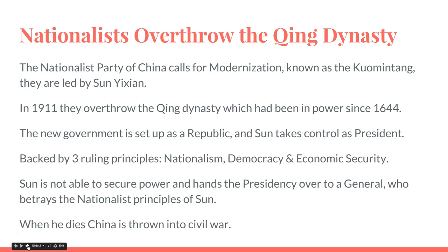So first, we need to talk about the different groups that were dissatisfied and angry with the Qing Dynasty and their emperor. One of the groups was called the Nationalists — the Nationalist Party of China — and they called for modernization. They were led by a guy named Sun Yat-sen. The party is also known as the Kuomintang. In 1911, they actually overthrew the Qing Dynasty, which had been in power since 1644.